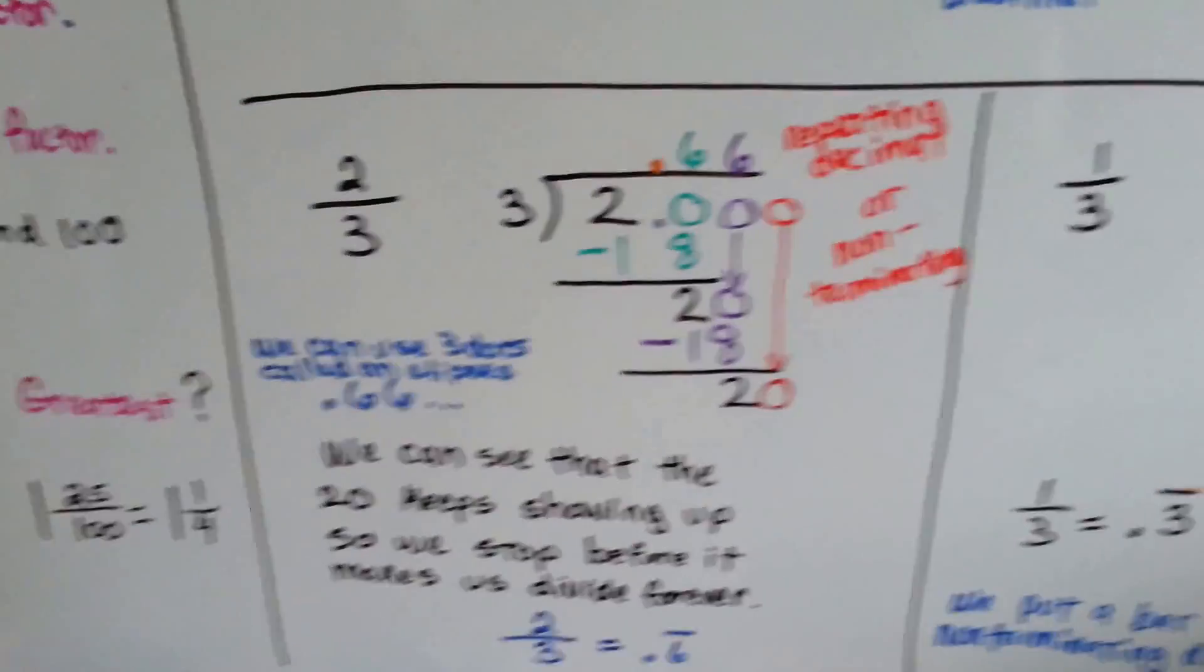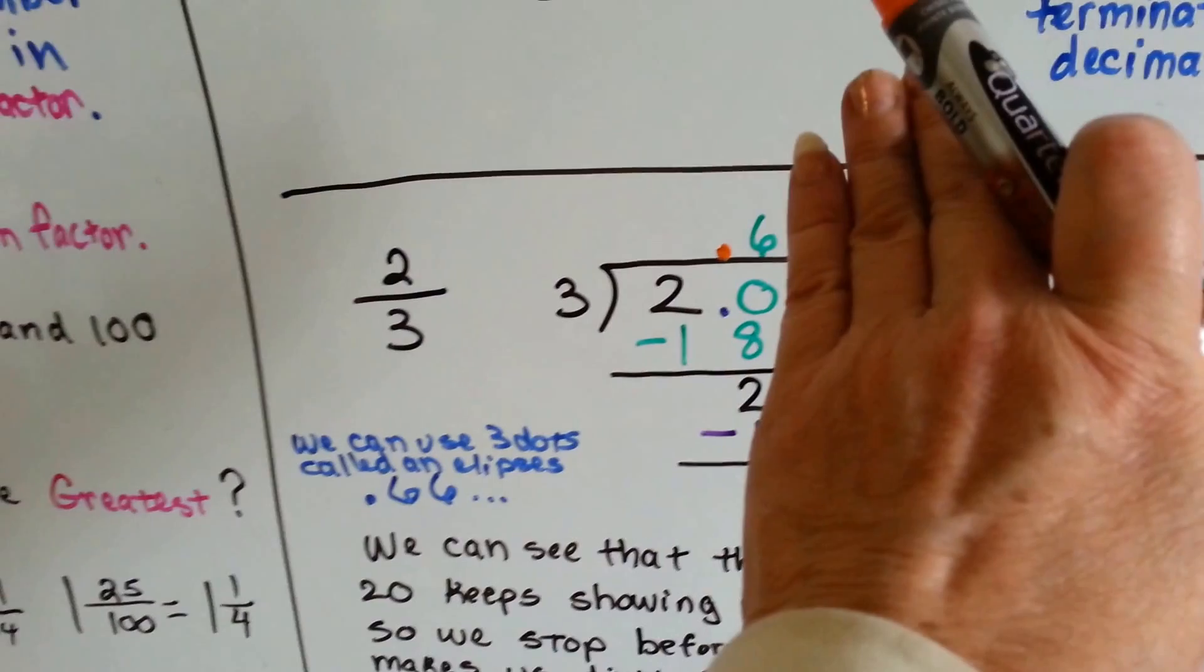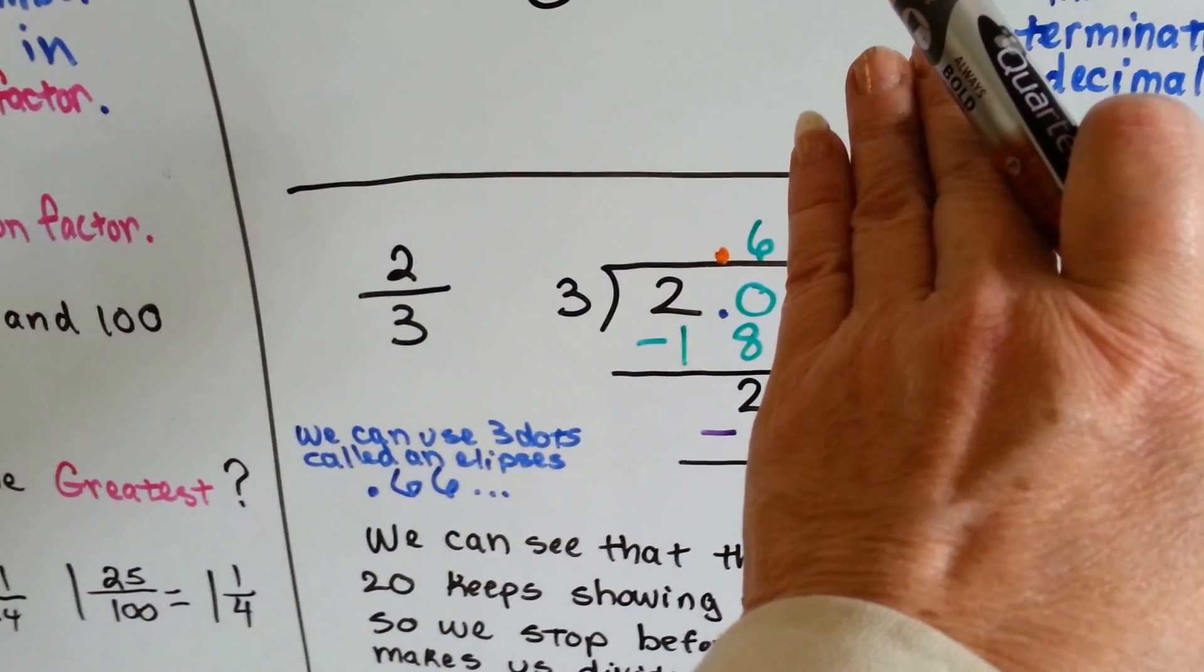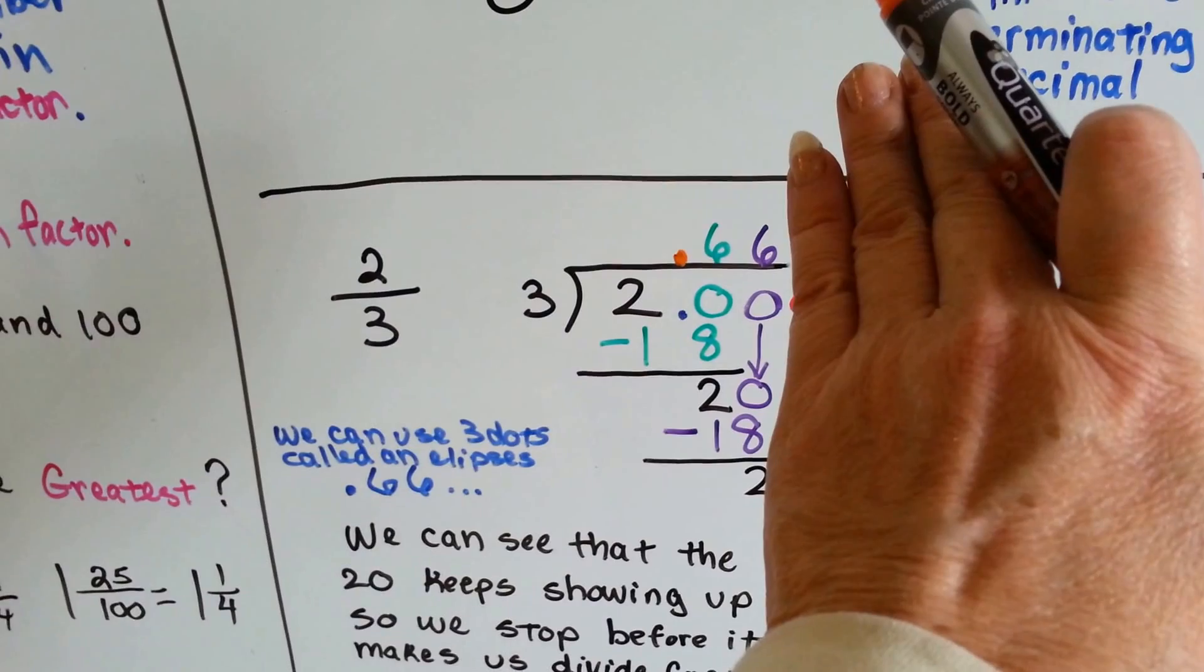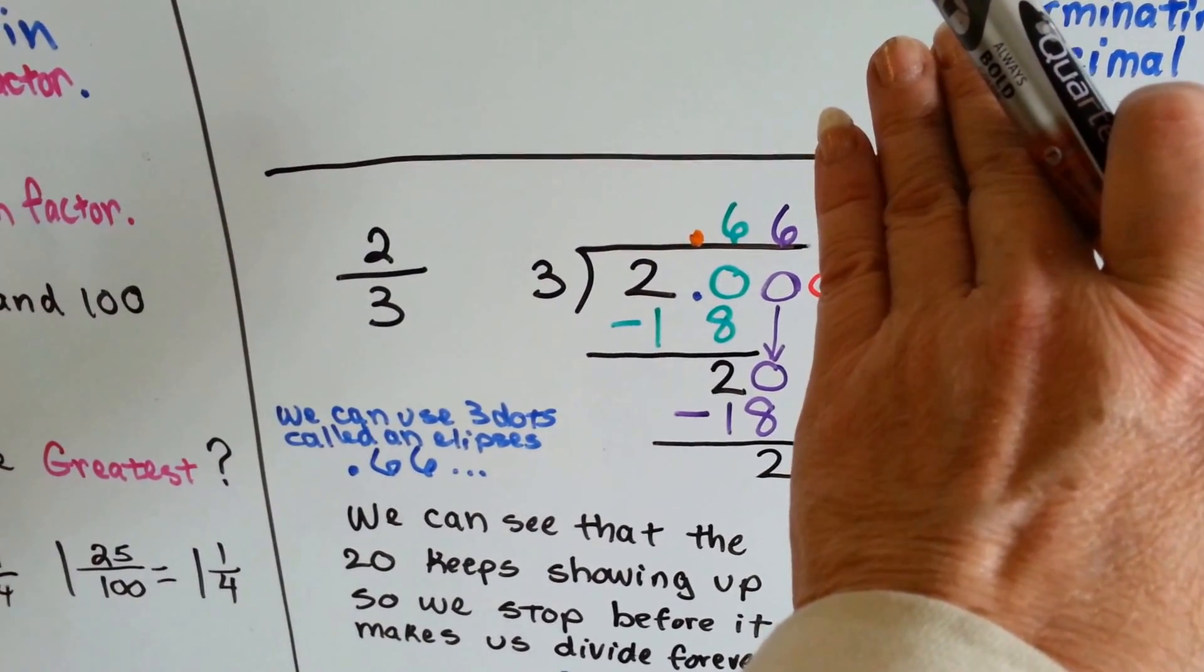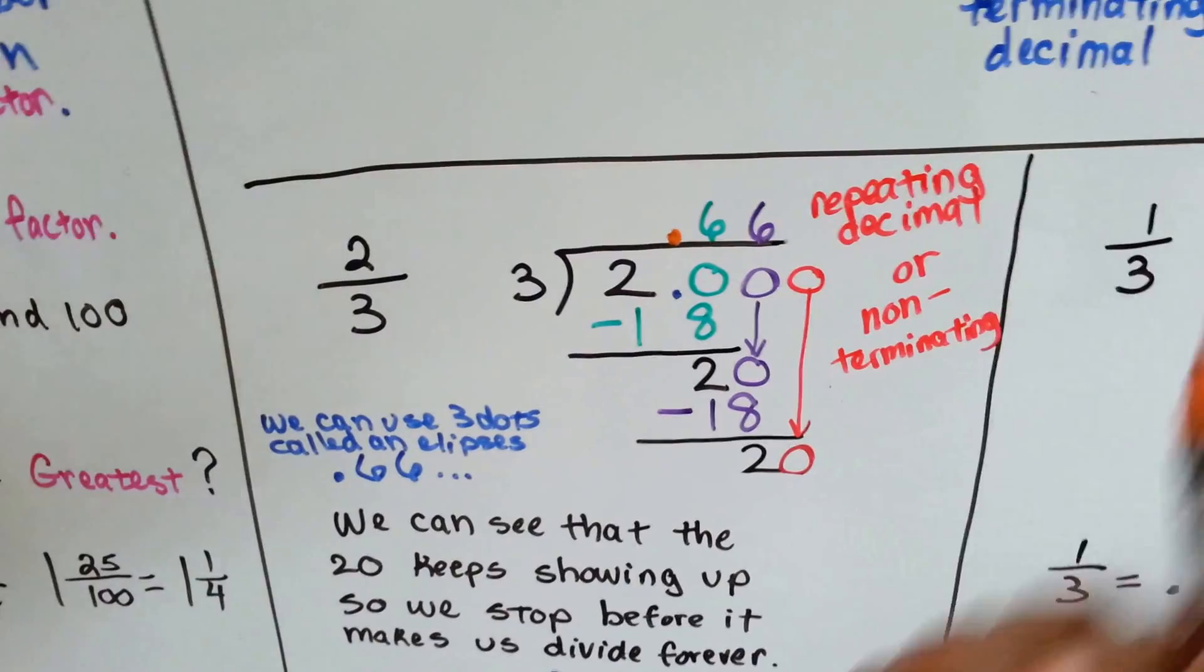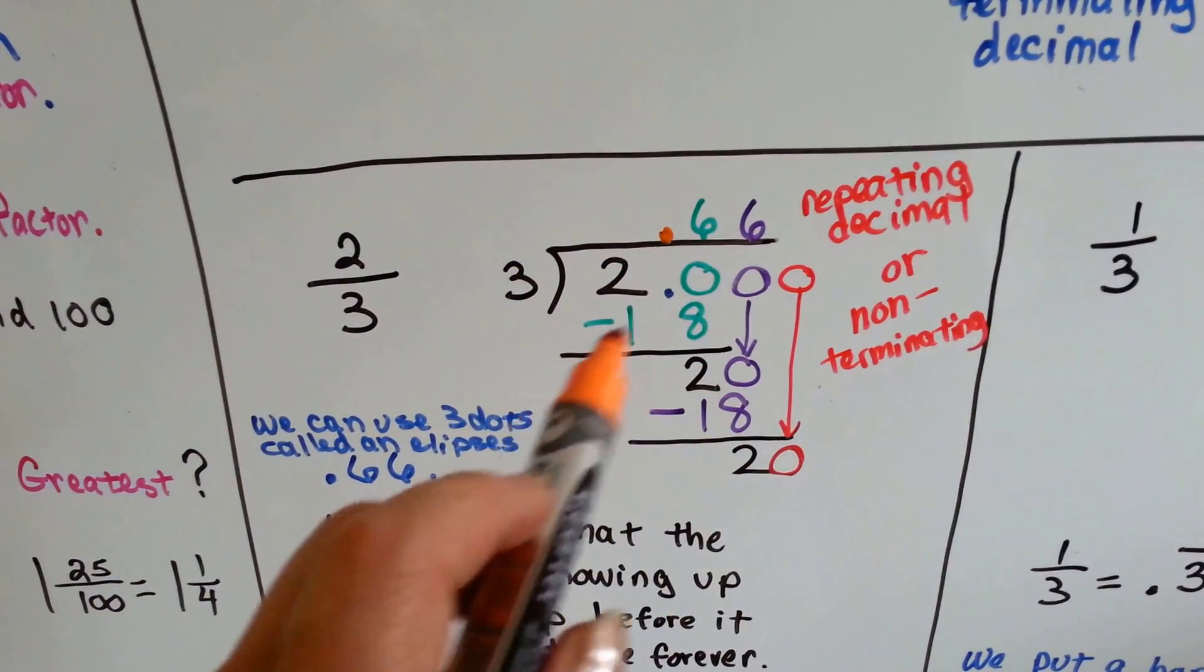But if we did two-thirds, what would happen is we would add the decimal point and the zero, and it would go in six times to be eighteen, and we'd subtract it and get a two, add another zero. It would go in six times, that would be eighteen. We'd subtract it, get a two, and add another zero. And it would just keep doing it and doing it and repeating over and over and over again.